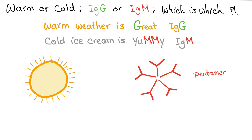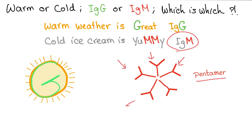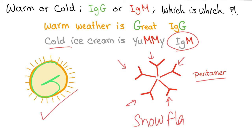Here is a better idea: draw a sun, which is warm, and draw a nice G inside it — since G is circular, IgG is warm. For IgM, recall that the IgM autoantibody is a pentamer with five monomers, which looks like a snowflake — and snowflakes are cold. So IgG is warm, IgM is cold. You will never forget it.